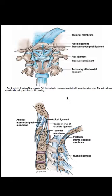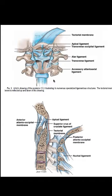What we want to do is understand the flexion rotation test for the upper cervical spine and specifically C1 on C2. So we're going to review the ligaments here first. This particular view of the upper cervical spine includes the foramen magnum here, C1 and then C2.